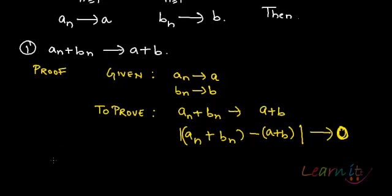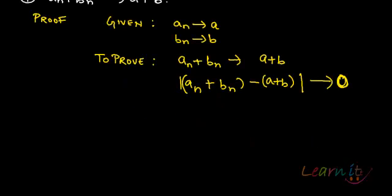So we can prove this. Now how to prove it? Now An plus Bn, mod of An plus Bn minus A plus B would be greater than or equal to 0. Would be greater than or equal to 0.